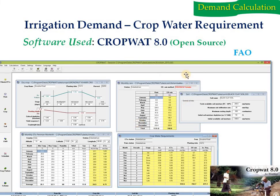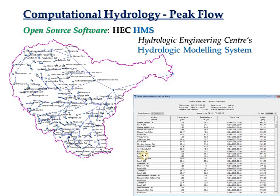CropWat is used to estimate irrigation demand by taking rainfall, temperature, crop data, and soil data as inputs, and estimating the total irrigation requirement per unit crop area. HEC-HMS (Hydrologic Modeling System) is open source — watersheds, watershed area, reservoirs, junctions, and reach properties are given as input, and it simulates and gives peak flow at any required point for a particular date.